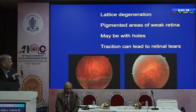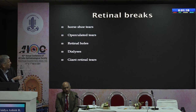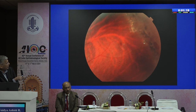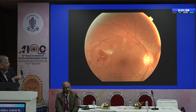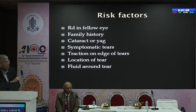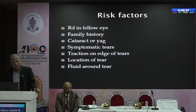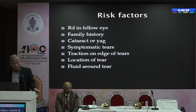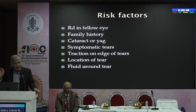There can be various types of tears — a horseshoe tear will give rise to flashes of light. Risk factors include RD in the fellow eye, family history, cataract or YAG laser. If your patient complains of flashes and floaters after YAG laser, be sure a PVD has been induced — dilate the patient and have a look. Tears can be symptomatic with traction on the edge, location-dependent, and fluid around the edge.